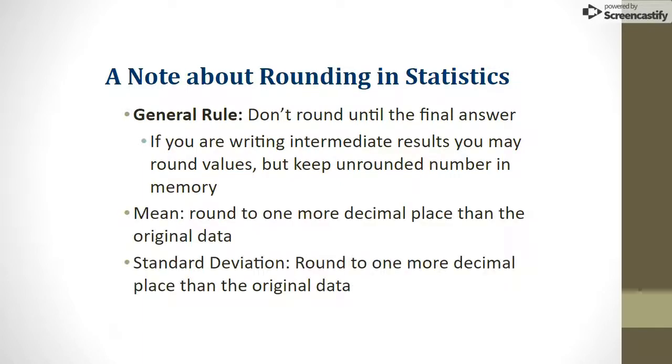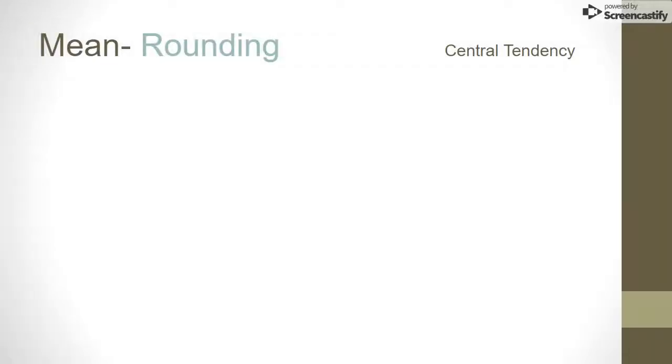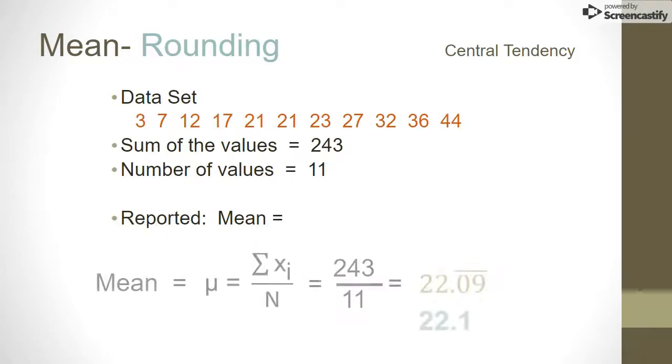When calculating the mean or the standard deviation, you should round your answer to one more decimal place than the original data was given. In this case, the result of the mean calculation is 22.09 with the 0.9 repeating. Notice that the bar above 0.9 indicates a repeating decimal. Keep this number saved in your calculator if you'll need it for future calculations, such as the standard deviation, which will be presented in part 2 of this series. Report the mean to one more decimal place than the original data. Since the original data is reported in whole numbers, report the mean to one decimal place, or 22.1.